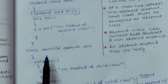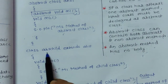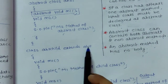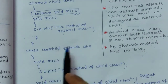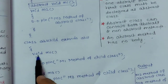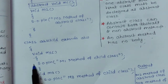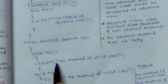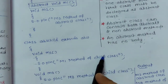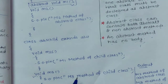Now this is an inherited class, we can call it abstract child, which is extended from the abstract class. Here we have defined a main void M1 — so this is the M1 method. Then next we have defined the M3 method.